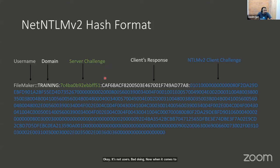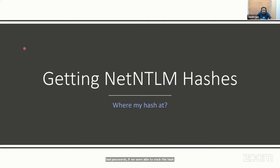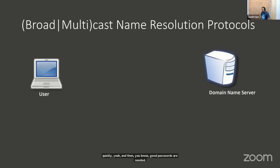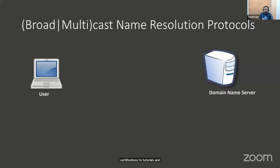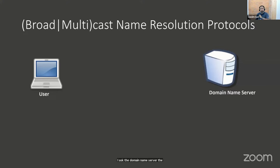Let's talk about how we get these hashes. When it comes to name resolution, we are told in certifications and college that when I want to know where a certain host is, I ask the DNS server only. That is not true, especially in Windows networks. In Windows networks, we send a request to the DNS server, but also — by default in Windows 10, Windows 11, and older versions — we ask everyone in the network, 'do you know where this host is, this file share?'